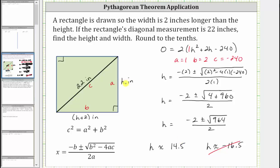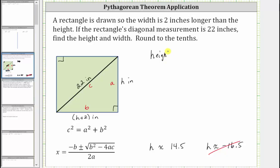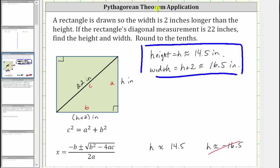We can go back and determine the height and the width. So because the height is equal to h, we know the height is approximately 14.5 inches. And we know the width is equal to h plus two inches. Well, 14.5 plus two is equal to 16.5, and therefore the width is approximately 16.5 inches. I hope you found this helpful.